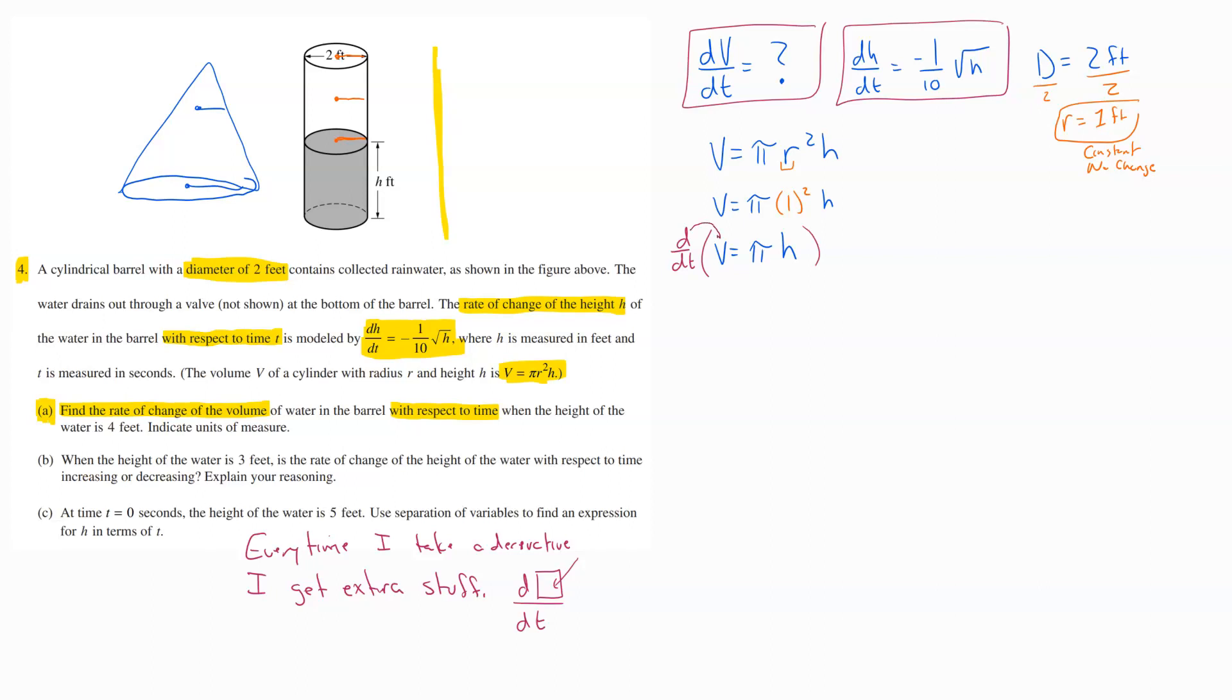So how that looks is I would take the derivative of v, technically that would be 1, I took the derivative of a v, so I get a dV/dt equals, and now as I come over here, remember pi is just a number. So when we take the derivative of this, I'm really only taking the derivative of H. So I would have pi, and then the derivative of H would have been 1. I took a derivative, I get my extra stuff, so I get a dH/dt.